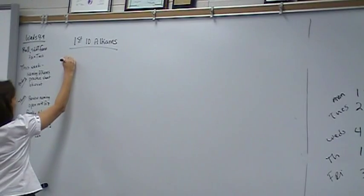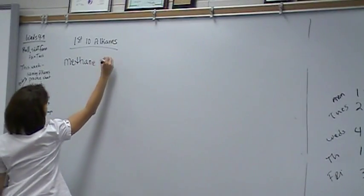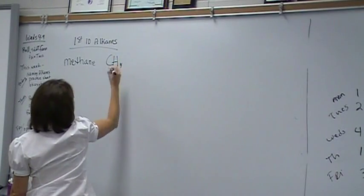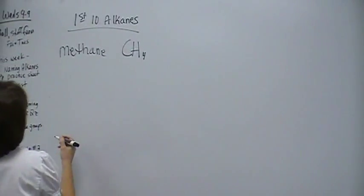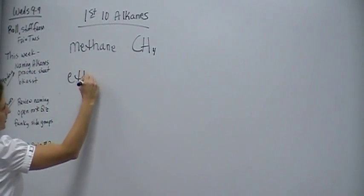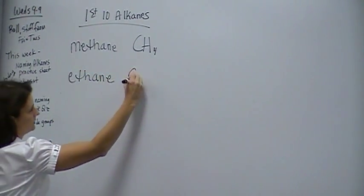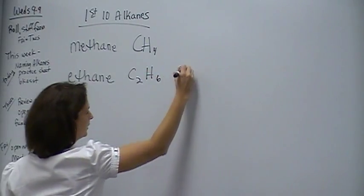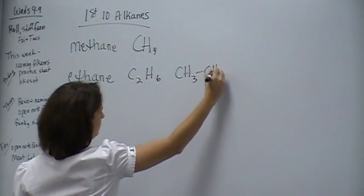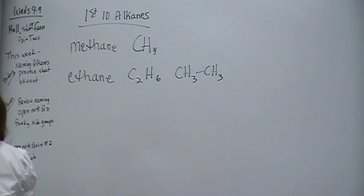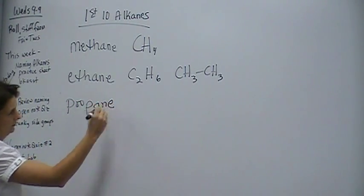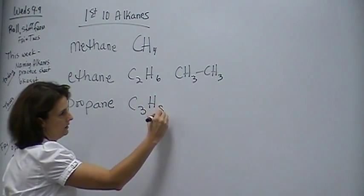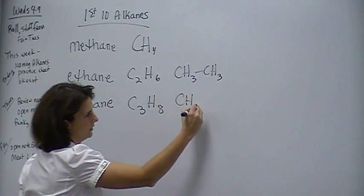The first alkane you want to know is methane. This formula is CH4, and the main thing you know, you already know him. He's got one carbon. Next one is ethane, C2H6. I'm going to give you the expanded formula for some of them. After ethane is propane, C3H8.